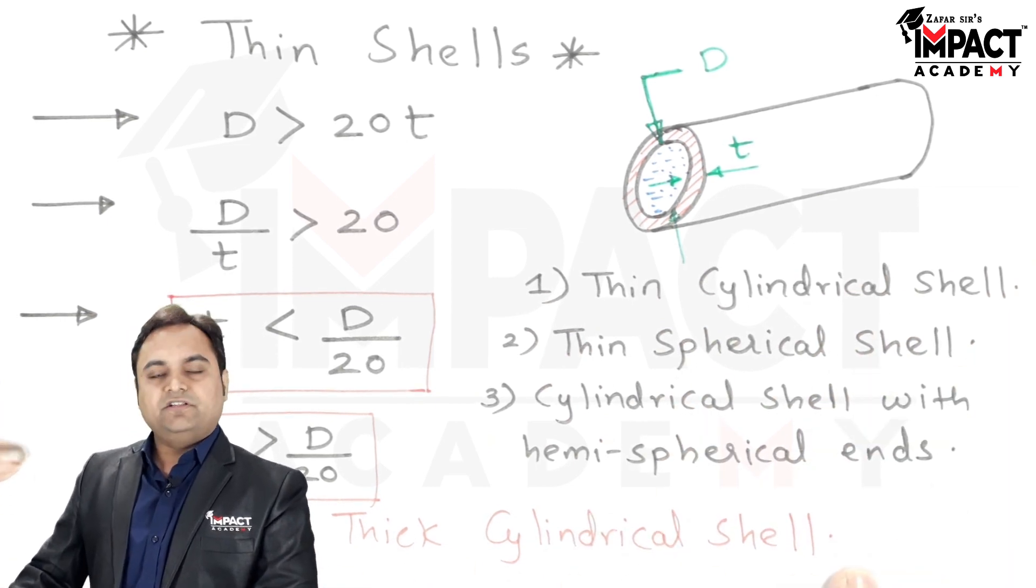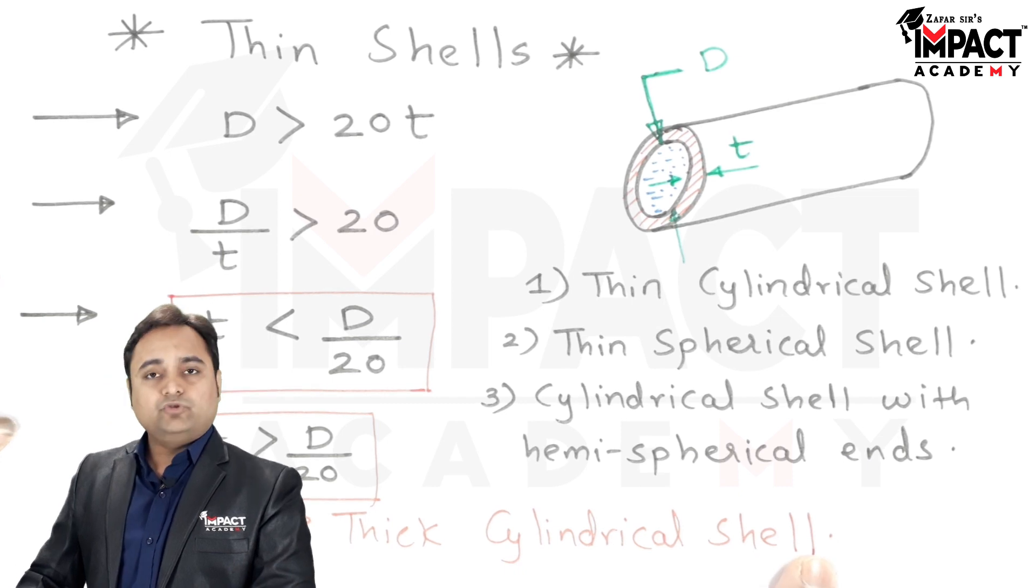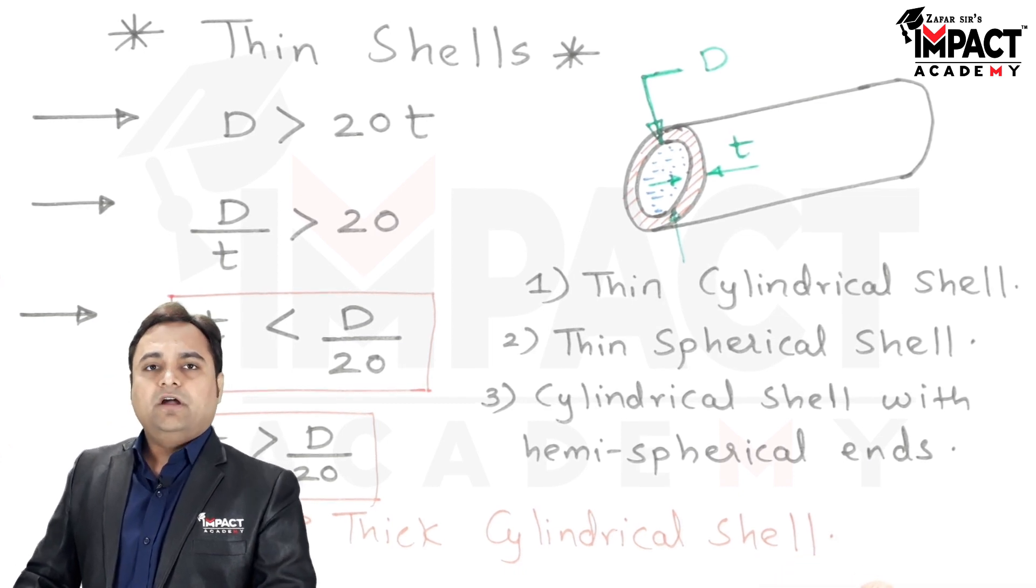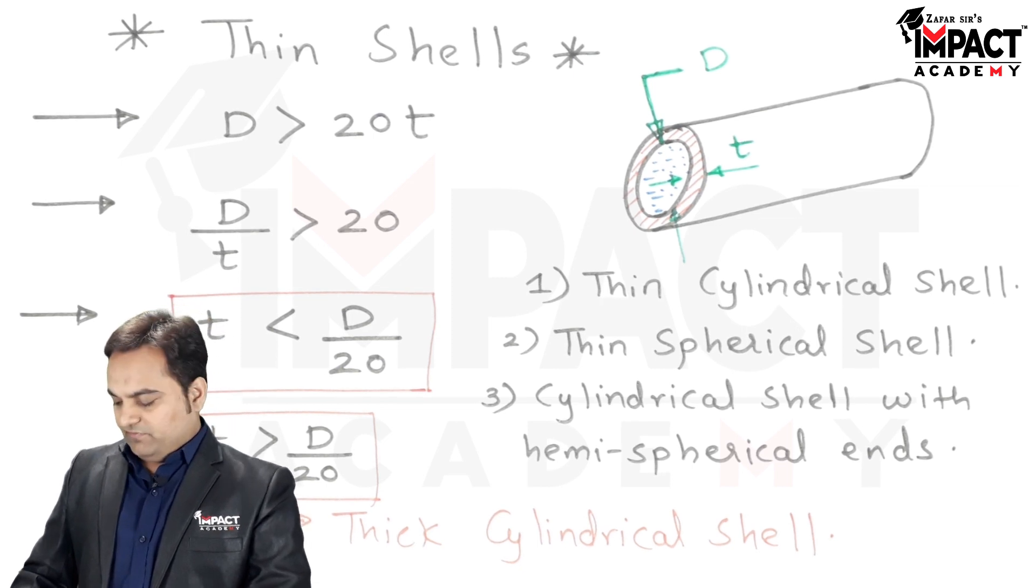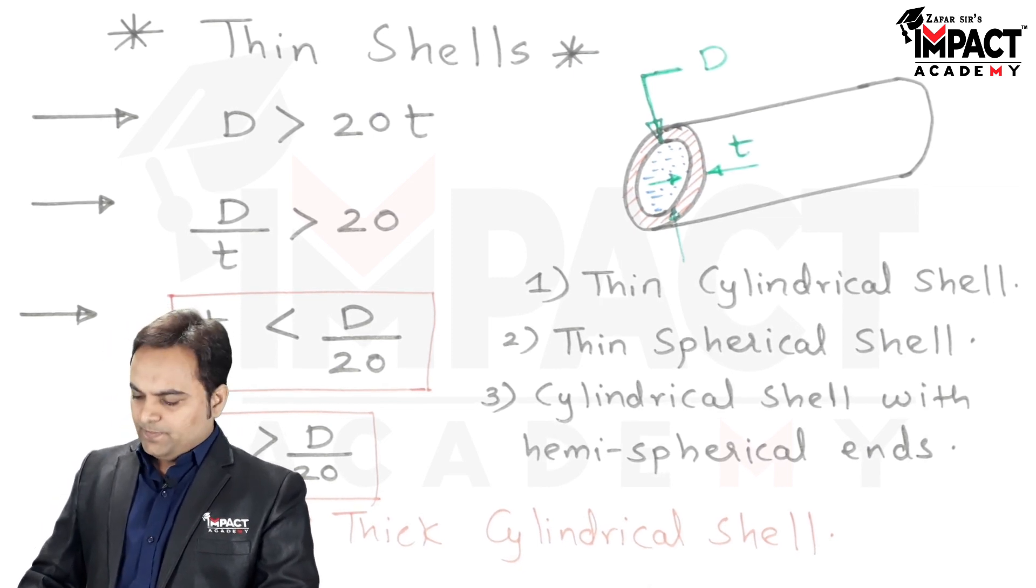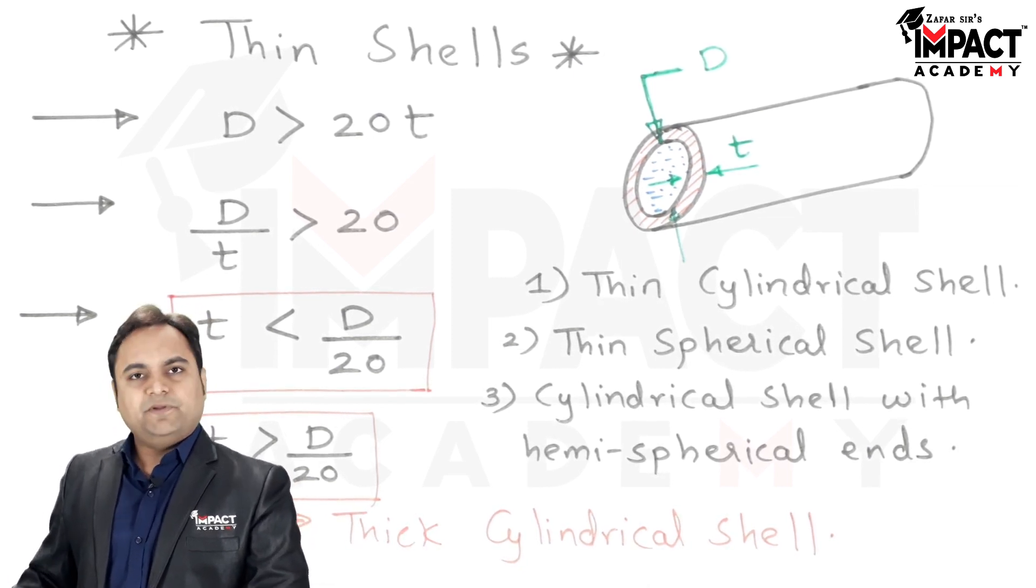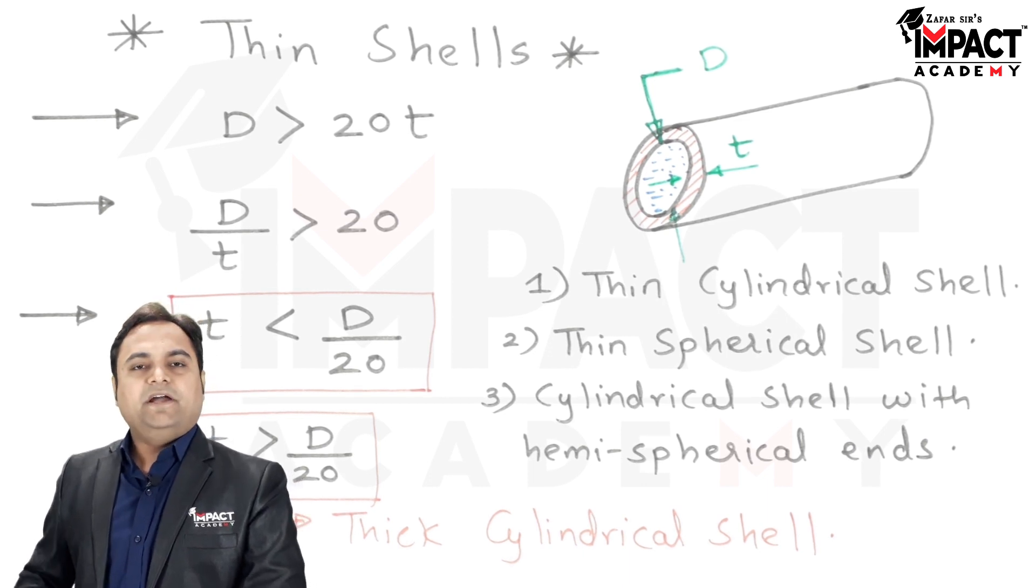Similarly, when we have thick cylindrical shells, these are used to store fluids which are at a greater amount of pressure. For example, in case of nuclear reactors, we are having thick cylindrical shells. In short, that was an explanation regarding what is meant by thin shells.